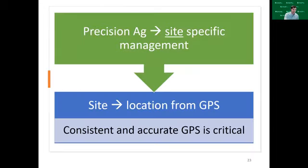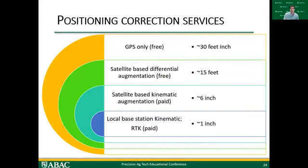When we think about Precision Ag, the main thing is site-specific management, and when we think of 'site,' we're thinking of location from GPS — or GNSS. To do that, we want consistent and accurate GPS, which is critical for applying our application prescriptions. Looking at current positioning and correction services: GPS alone is free and gives about 30 feet accuracy. Satellite-based differential augmentation is free but gets you to about 15 feet. Most Precision Ag applications require the lower two levels — satellite-based kinematic augmentation and local base station kinematic.